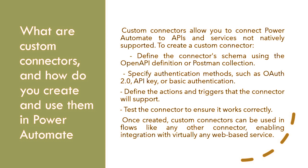What are custom connectors and how do you create and use them in Power Automate? Custom connectors allow you to connect Power Automate to APIs and services not natively supported. To create a custom connector: define the connector schema using the OpenAPI definition or Postman collection; specify authentication methods such as OAuth 2.0, API key, or basic authentication; define the actions and triggers that the connector will support; and test the connector to ensure it works correctly. Once created, custom connectors can be used in flows like any other connector, enabling integration with virtually any web-based service.